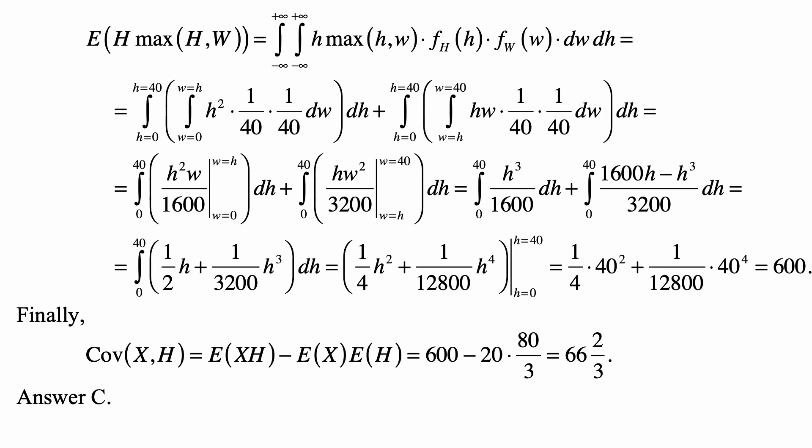So, covariance is equal to E of XH minus E of X times E of H, and that's equal to 600 minus 20 times 80 over 3, and that ends up being 66 and two-thirds, or approximately 66.67, which is answer C.